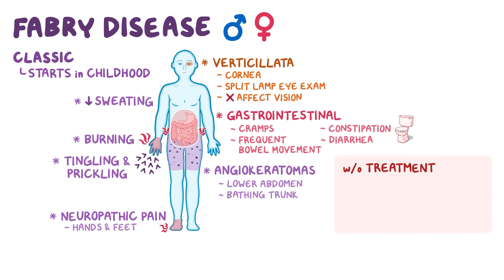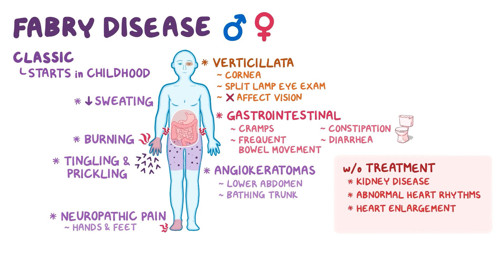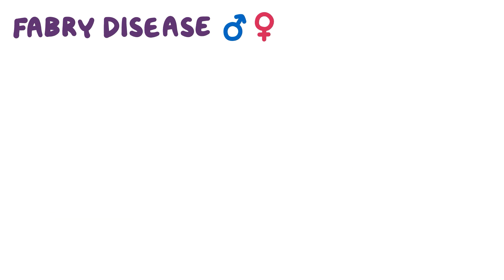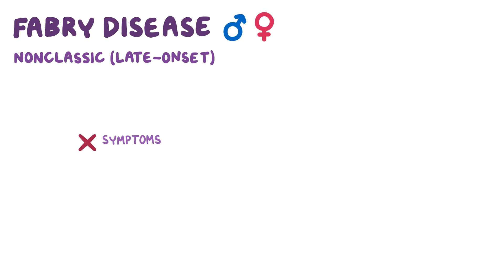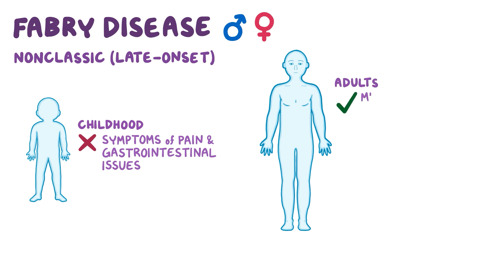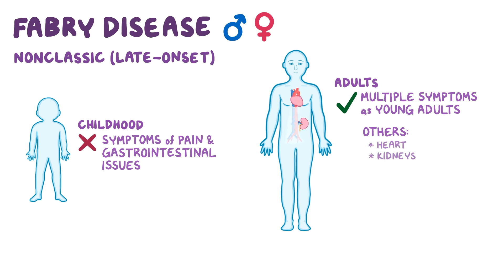Without treatment, Fabry disease complications can include kidney disease, abnormal heart rhythms, heart enlargement, and an increased stroke risk. Non-classic or later onset Fabry disease doesn't cause the earlier symptoms of pain and gastrointestinal issues in childhood, but some adults develop multiple symptoms as young adults. Others may only show signs of Fabry disease in a specific organ, like the heart or the kidneys. However, these individuals also have a higher risk of Fabry-associated complications.